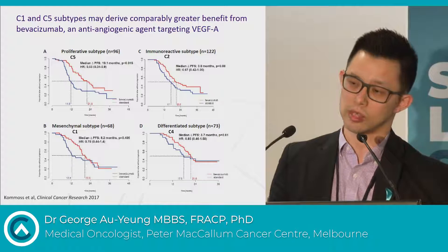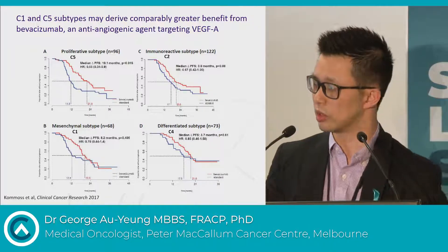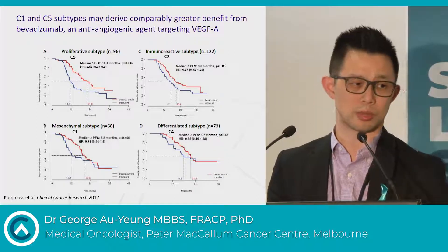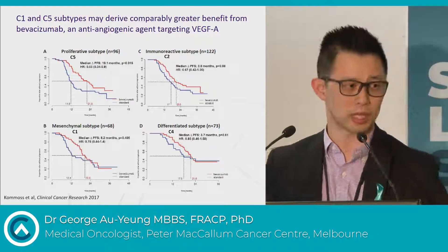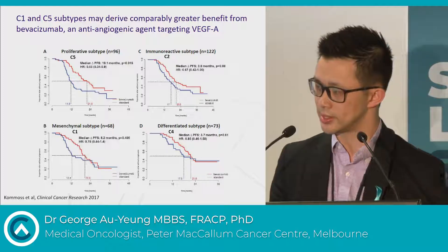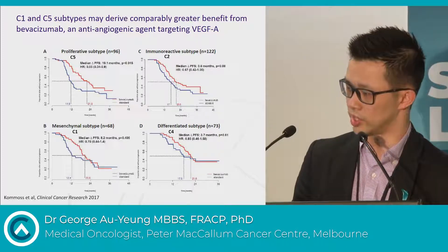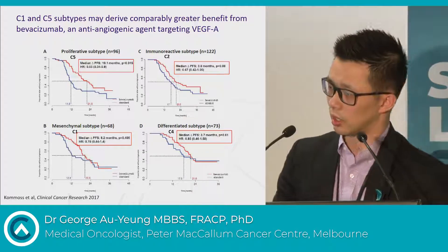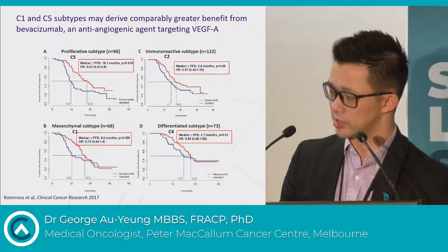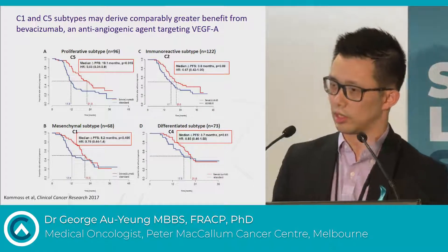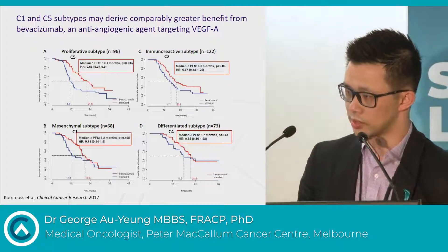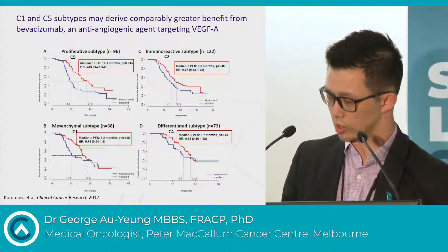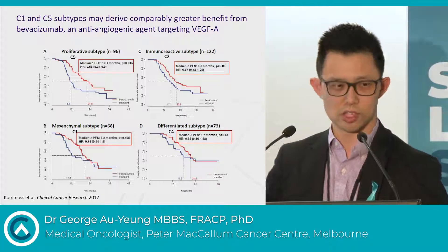There's been a lot of interest in these subtypes and what else they're useful for. It's been 10 years since they were first identified. A study published in Clinical Cancer Research last year looked at data from patients treated on a clinical trial of carboplatin-paclitaxel versus carboplatin-paclitaxel and bevacizumab in the frontline setting, and identified that patients with the C1 or C5 subtype appeared to have a greater benefit from the addition of bevacizumab. My somewhat controversial view is that that's in part because, if you look at the control groups, C1 and C5 are actually doing extremely poorly compared to C2 and C4, and that's possibly why they benefit more from bevacizumab — though that's speculative, not proven.